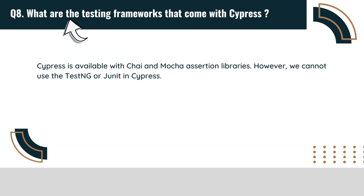What are the testing frameworks that come with Cypress? Cypress is available with Chai and Mocha assertion libraries. However, we cannot use TestNG or JUnit in Cypress.